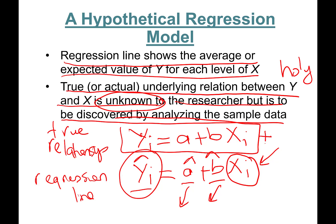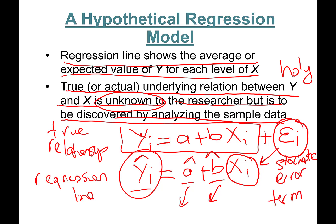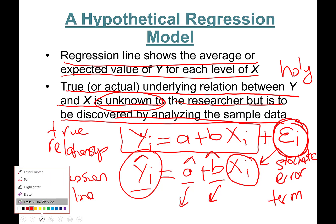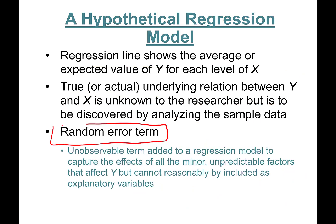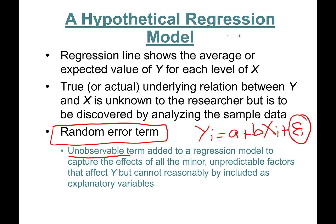In the true relationship we add something called an error term — the stochastic error term, epsilon_i. This is a stochastic, random error term that captures any random shocks to the model. Random error terms are added to a regression relationship to signify there is some random component. The terms stochastic and random are synonyms for this error term.